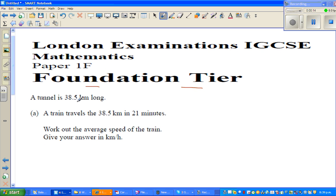This question is on speed. A tunnel is 38.5 km long. A train travels 38.5 km in 21 minutes. Work out the average speed of the train. Give your answer in kilometers per hour.